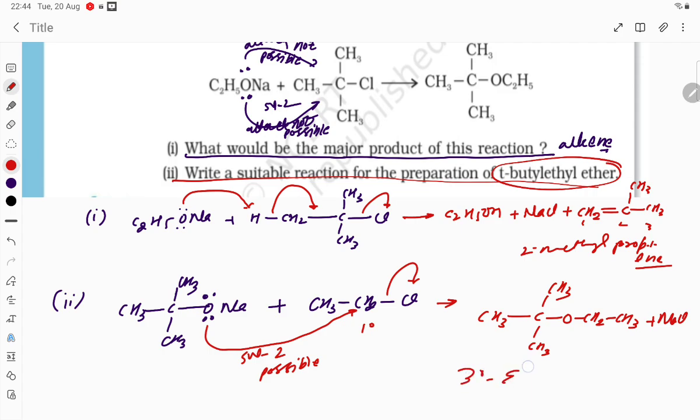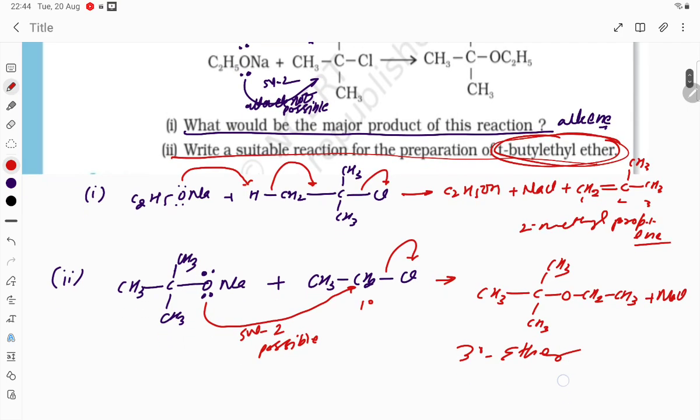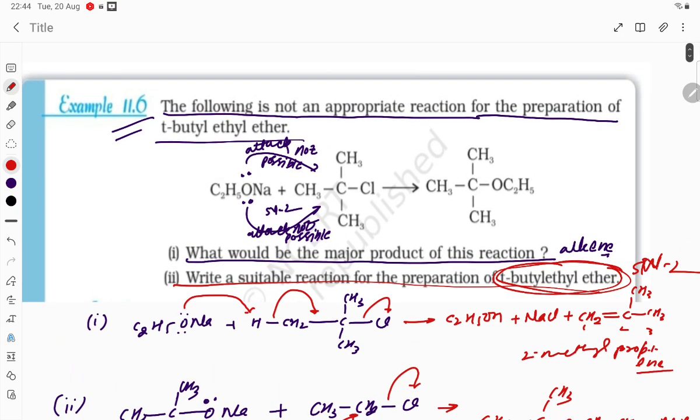So here is CH3, this is again CH3, with O-CH2-CH3, plus NaCl. So this is the tertiary ether, tertiary butyl ether. This is our required answer. Since it is following SN2 reaction, the alkyl halide should be primary alkyl halide, and the base alkoxide can be anything.